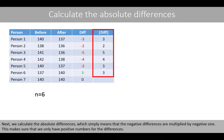Next, we calculate the absolute differences, which simply means that the negative differences are multiplied by negative 1. This ensures that we only have positive numbers for the differences.